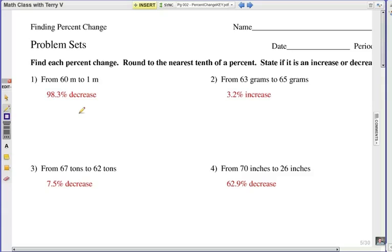Alright, let's take a look. Number 1, how did we get that? Well, the difference is going to be 59, right? So you've got 59 meters, and you're going to divide it by the original, which is 60. After you divide, you're going to get .983, and then round it to 98.3%.